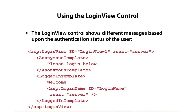The login view control is particularly useful because the login status control just shows login/logout links. But sometimes you want to show more specific messages. In this example, we use two templates: the anonymous template and the logged-in template. If the user is anonymous and hasn't logged in yet, we show that text. If they're already logged in, we say welcome and use the login name control to automatically write out their username — just by dragging the login name control into the logged-in template.